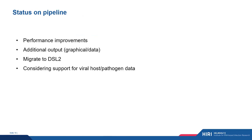On pipeline status: there are a number of performance improvements to include, an update to the latest template coming shortly, and additional outputs I'd like to add — graphical outputs, data outputs, and WIG files separated by host and pathogen. I'd also like to migrate to DSL2. A question I get asked most is whether there's support for all dual RNA-seq datasets — and currently the answer is no, it's just bacterial, based on the transcriptome architecture discussed earlier. We're considering support for viral host-pathogen datasets, and if anyone is interested in that, I'd be curious to talk about features they'd like to see included in the next update.